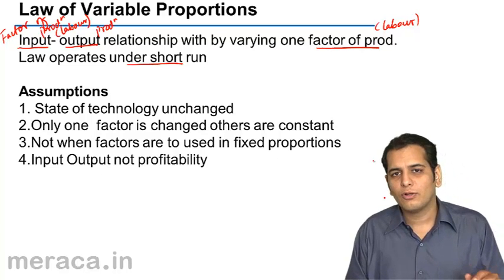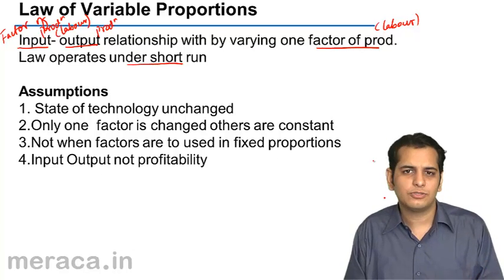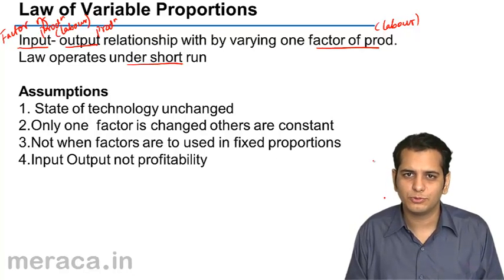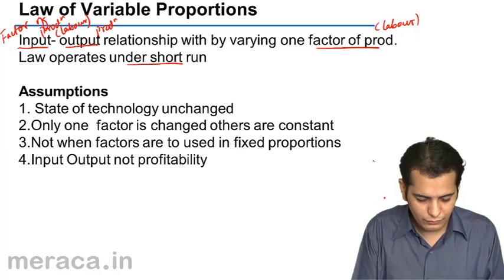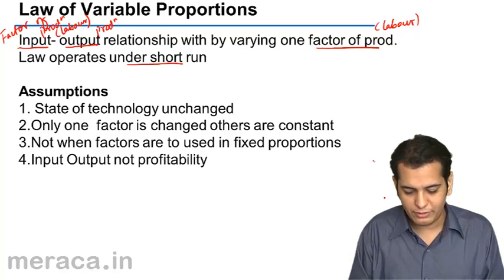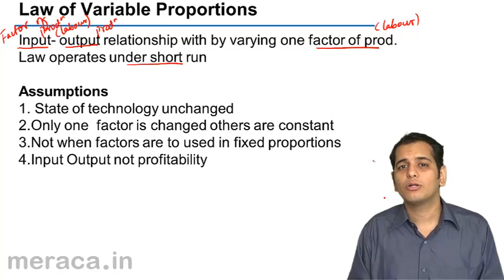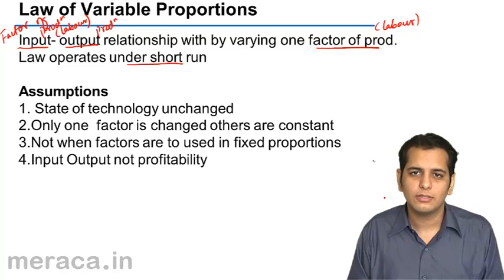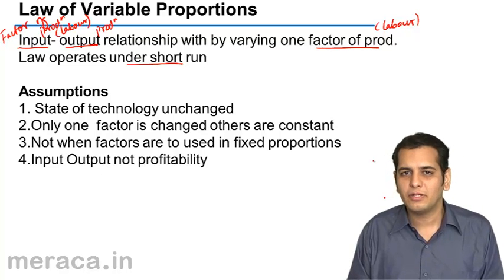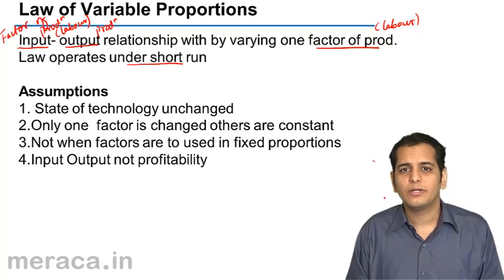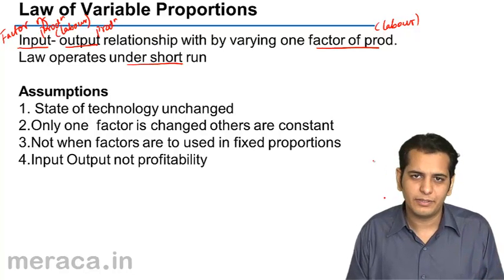Before going to the law, let's first learn what are the assumptions on which the law of variable proportions is based. First, the state of technology remains unchanged. This is a very important assumption — the state of technology should remain unchanged, otherwise our purpose will get defeated.